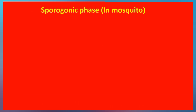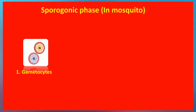The sporogonic phase starts when a female Anopheles mosquito feeds on an infected person's blood and takes up gametocytes from that blood. When the mosquito bites such a person, it picks up the gametocytes. Once inside the mosquito, the gametocytes find themselves in the midgut of the mosquito.